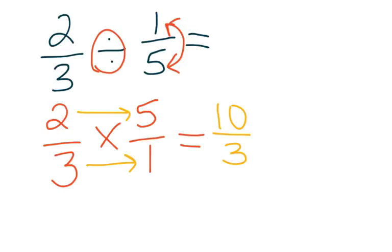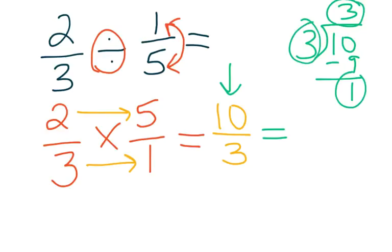And now you'll notice that we have an improper fraction. So I have to now put this into simplest form by rewriting this improper fraction as a mixed number. I know that 3 can go into 10 three times. 3 times 3 is 9, and I have a 1 left over, so I'm going to have 3 and 1 third as my final answer.